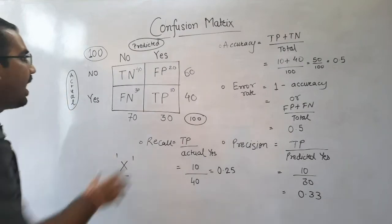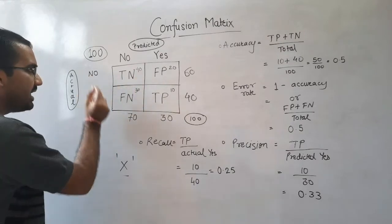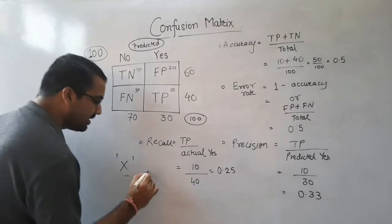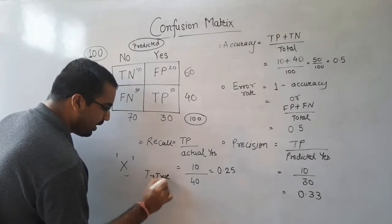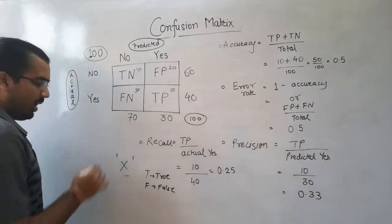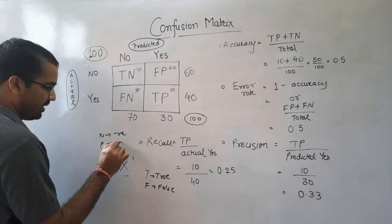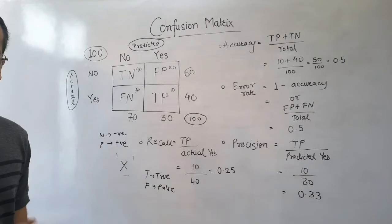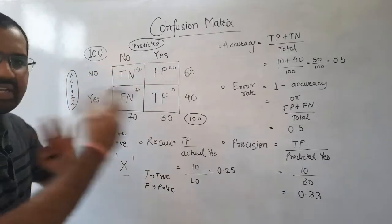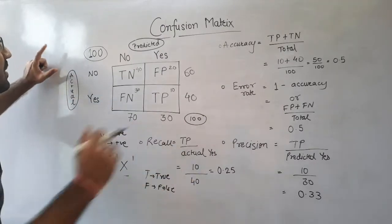This is the matrix that is formed, and there are labels: TN, FP, FN, TP. By T I mean true, by F I mean false, by N I mean negative, and by P I mean positive. But why are they combined in this way — TN, TP, FP? I'm going to explain that now.